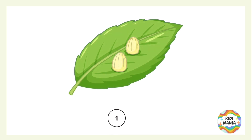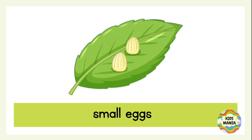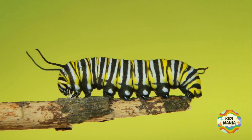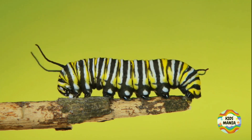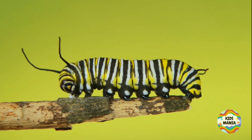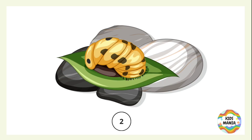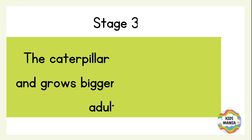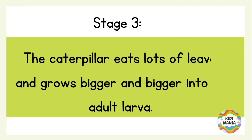These are small eggs laid on a leaf. Stage two: the egg hatches into a caterpillar. The other name for this caterpillar is larva, or young larva. This is the caterpillar, or a young larva.